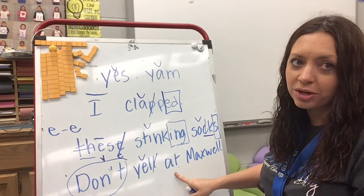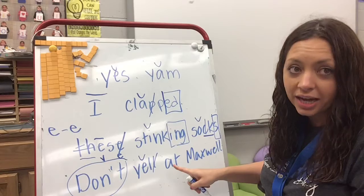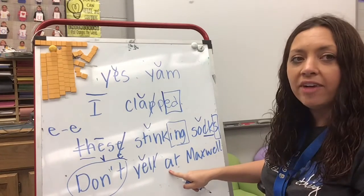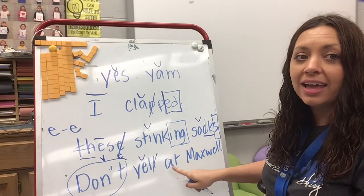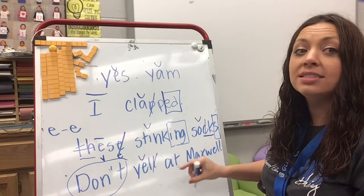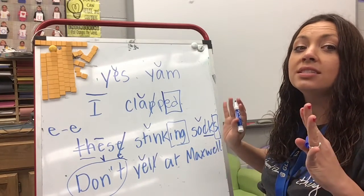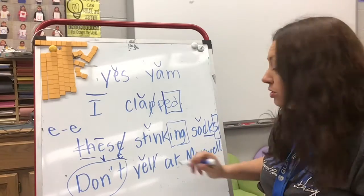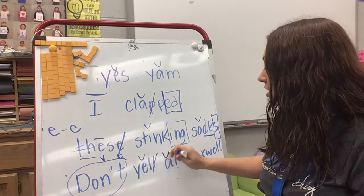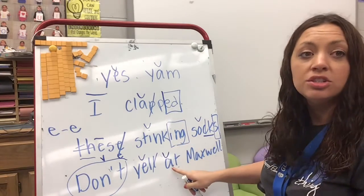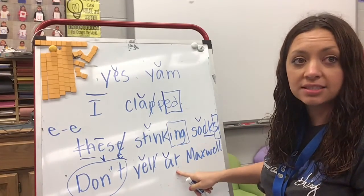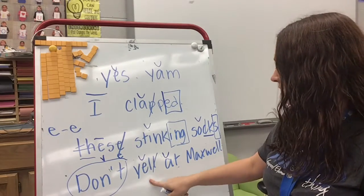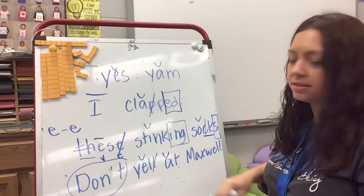You guys know this word, but we're still going to code it. So we have a vowel — it's A. It's right in front of the consonant, so that means it's going to be closed and it's going to be short. So at. Don't yell at.